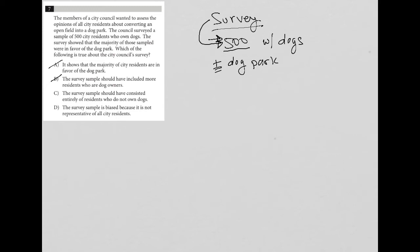Choice C, the survey sample should have consisted entirely of residents who do not own dogs. Now, that's also not true for the exact reason why only speaking to people with dogs would not make a great survey, right? So we want to have truly a representation of the entire town, of the entire city. So only speaking to residents who do not own dogs would not solve the problem here.